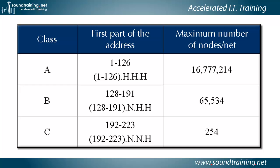Next, class B was used for medium-sized networks, supporting approximately 65,500 hosts. The first two octets were used for the network portion and the last two for the host. The first octet must fall within the range of 128 to 191 to identify it as a class B.